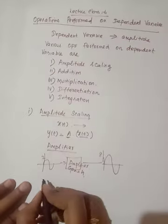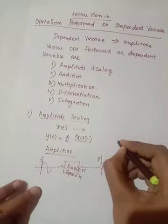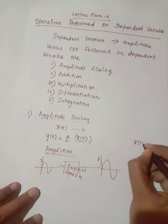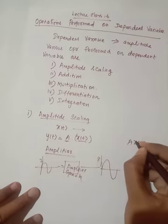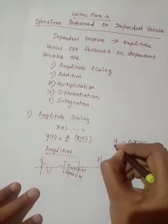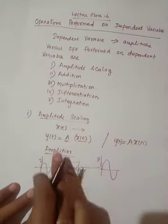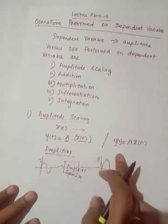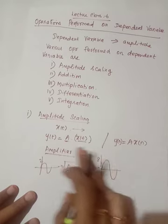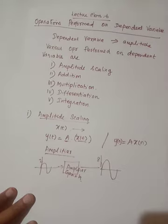Similarly, if you want to perform amplitude scaling on discrete time signals, the same thing applies: you consider x(n) and multiply it by a constant a, which gives y(n). So amplitude scaling is applicable for both continuous time and discrete time signals. Now, we will see some examples.